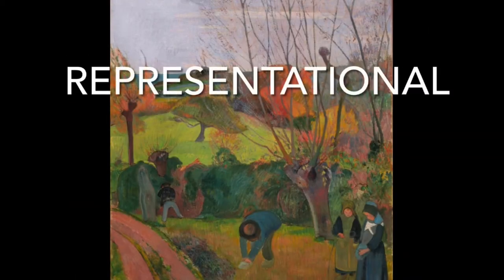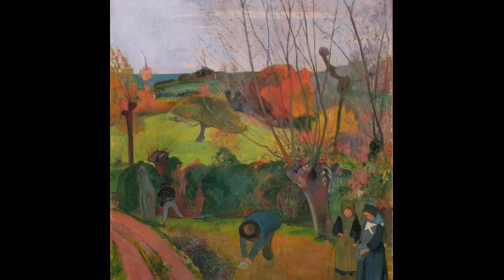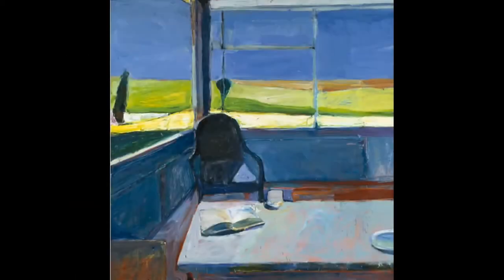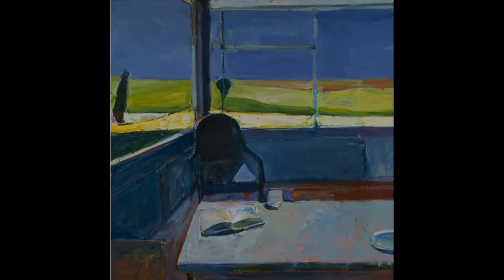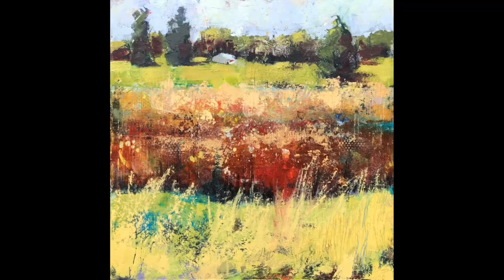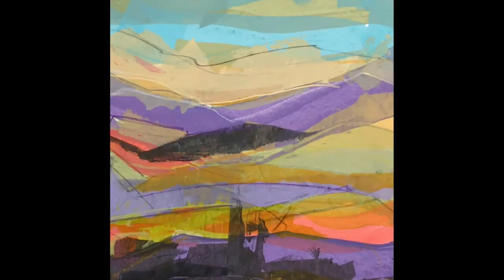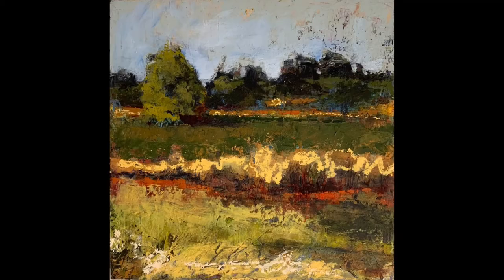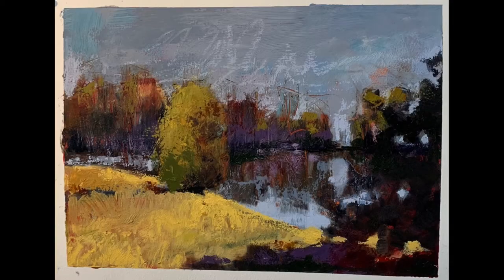Another category is representational art, which refers to art that represents something — whether it be a landscape, still life, or a figure. The viewer can usually understand what the subject matter is, but the artist has taken liberties in how they choose to represent it. These pieces are recognizable, but the artist has still used some types of simplification or artistic license in how they represent the subject.